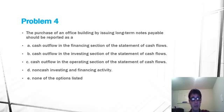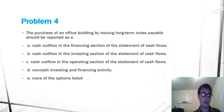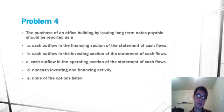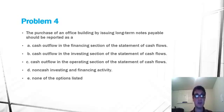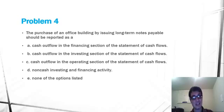So the problem reads: the purchase of an office building by issuing long-term notes payable should be reported as: A. Cash outflow in the financing section of the statement of cash flows, B. Cash outflow in the investing section of the statement of cash flows.